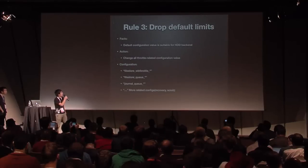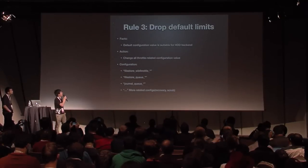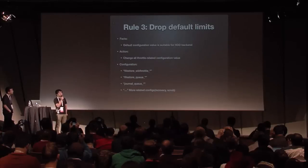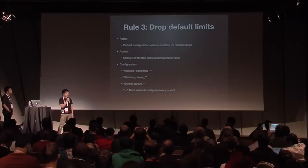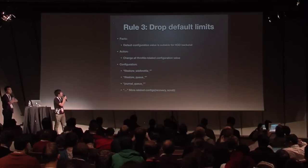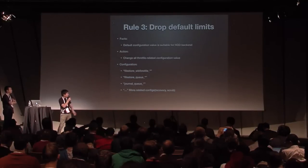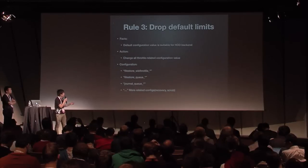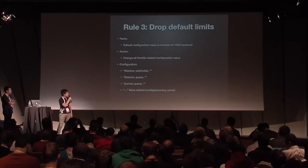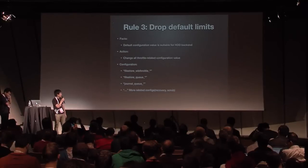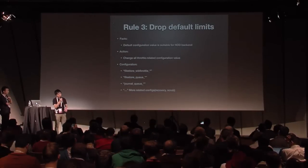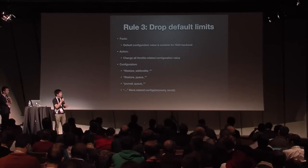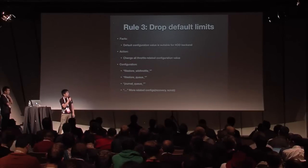Optimization point 3 is tuning default limits. Ceph is mainly designed for HDD disks, and HDD is much slower than SSD, so many configuration values need to be changed — for example, filestore dirty time, filestore sync interval, and recovery and scrub related settings. We can increase these values by 10 times compared to their default values.